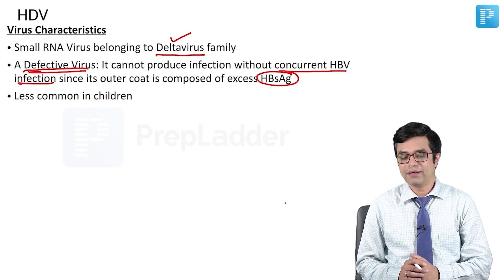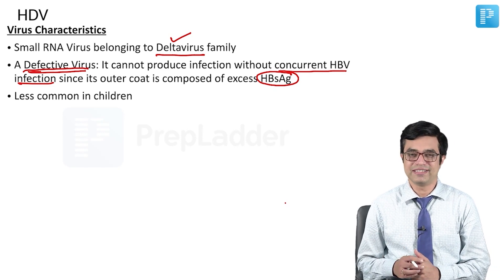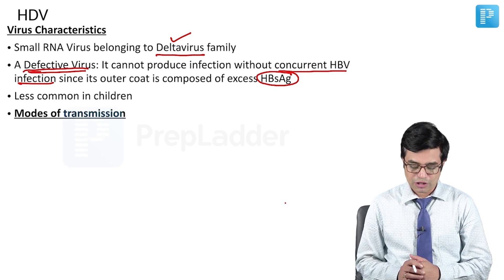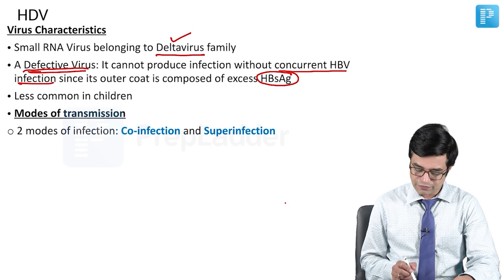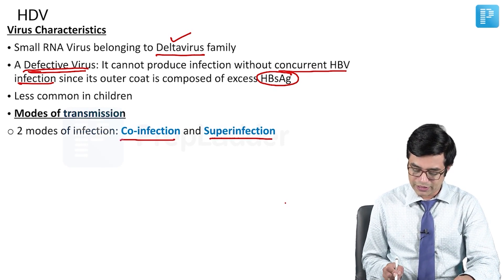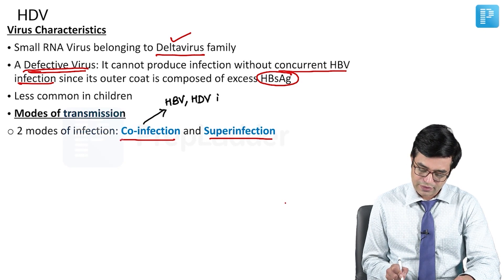Hepatitis D virus is very less common in children; it is not very frequently seen in children. There are two modes of infection: co-infection and super-infection. Co-infection means both HBV and HDV infection occur at the same time.